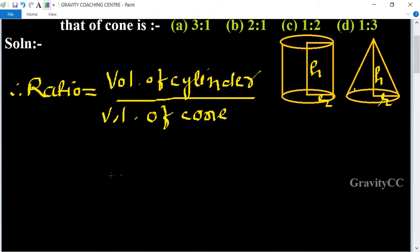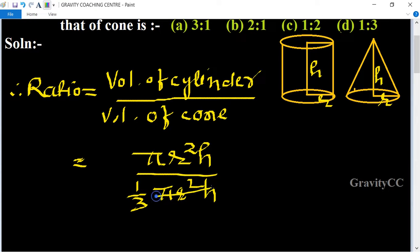So we know that the formula of volume of cylinder equal to πr²h upon volume of the cone is 1/3 πr²h. So here πr²h and πr²h cancel.